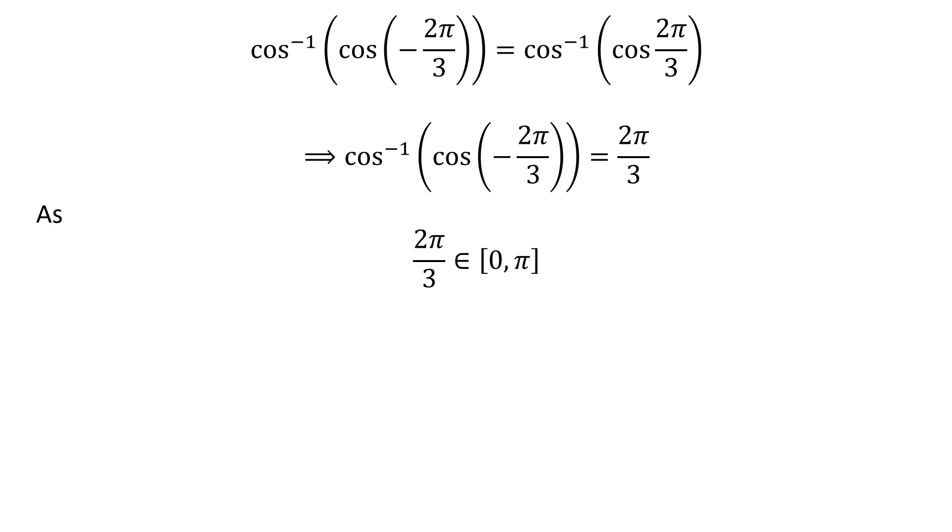So application of properties of inverse function gives us cos⁻¹(cos(-2π/3)) = 2π/3, as 2π/3 belongs to the closed interval [0, π].